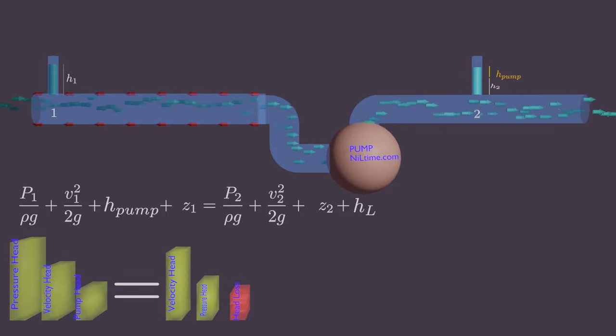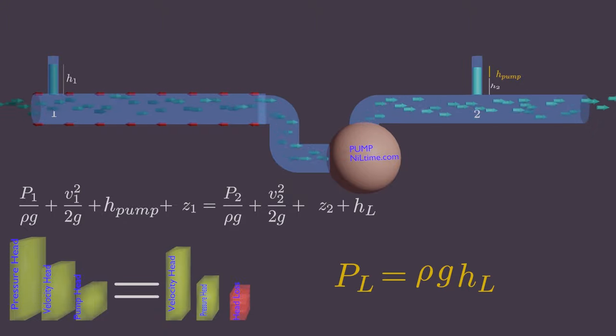In the analysis of piping systems, pressure losses are commonly expressed in terms of the equivalent fluid column height called the head loss. So pressure loss and head loss are related with this equation.